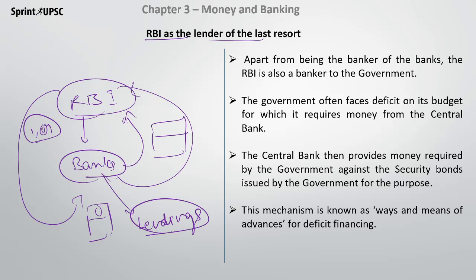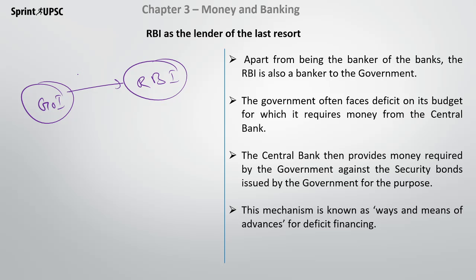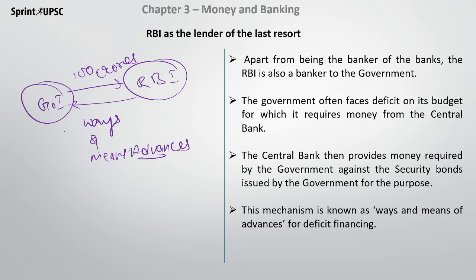The second function is that when the government has a deficit and requires money, the government approaches its own bank, which is RBI. The government of India's bank is RBI. If the government says it needs 100 crores, this is done through ways and means of advances — WMA in short. The government of India gives a bond to RBI and promises to return the amount.